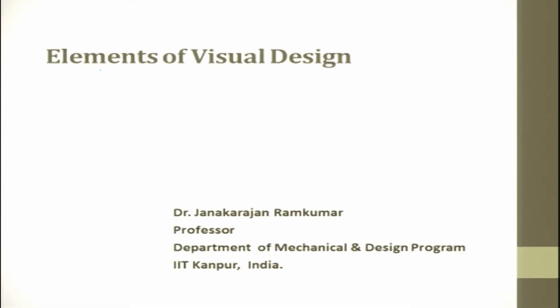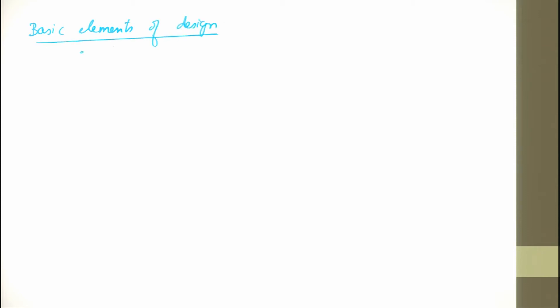Welcome back to the lecture on elements of visual design. Let me do a recap of what we covered in the previous lecture. The basic elements of design are: line, shape, color, texture, and space.